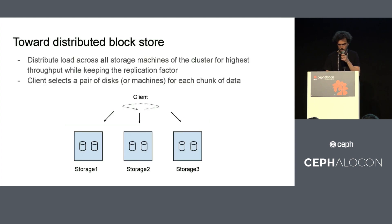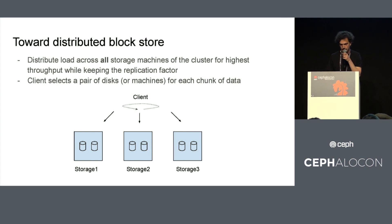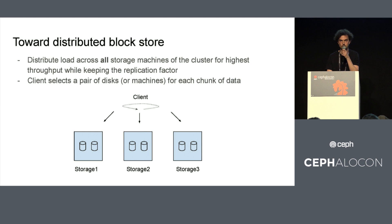What we want to do is move toward some distributed block store — we want each customer volume to be stored on each machine in the cluster in order to reach the highest throughput possible. If you go in this kind of domain, then the client needs to take the decision for each data chunk as to which pair of storages and which pair of disks to write the data to.